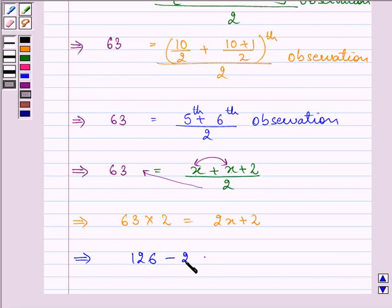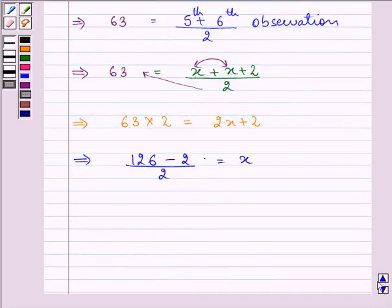So 126 minus 2, divided by 2, equals x. We subtract 2 from 126, giving us 124 divided by 2, which equals x.